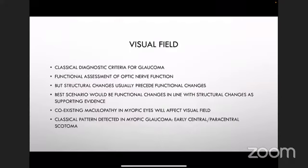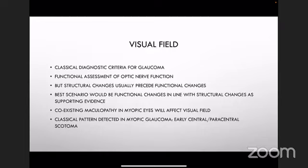We try to supplement clinical examination with visual field, which is the classical diagnostic criterion for glaucoma. But nowadays we know that functional change always comes before structural changes, and you need a significant structural change before you see optic nerve dysfunction. So the role of visual field currently is not for the initial diagnostic procedure — it is best used when functional changes can be shown to correlate with structural changes.